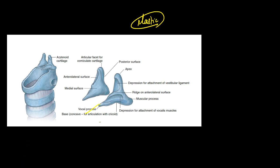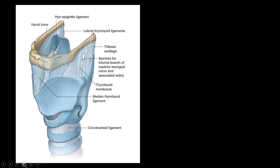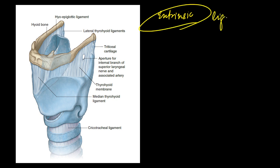On the vocal process we have the attachment of the vocal cord. We have few extrinsic ligaments of the larynx. These extrinsic ligaments include the hyoepiglottic ligament, the thyrohyoid membrane, and the cricotracheal ligament. These three form the extrinsic ligaments of the larynx. On the thyrohyoid membrane we have one aperture through which passes the internal branch of the superior laryngeal nerve.